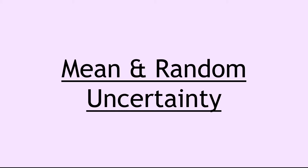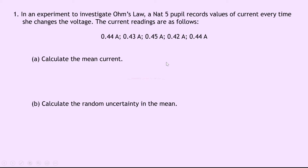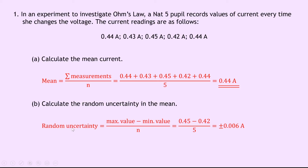Next we look at mean and random uncertainty. Question 1: in an experiment to investigate Ohm's law, a student records 5 values of current in amps. Part a asks to calculate the mean current — we add them all up and divide by 5, giving a mean of 0.44 amps, stated to two decimal places to be consistent with the question. Part b asks for the random uncertainty in the mean: maximum minus minimum divided by total number of measurements, which gives 0.45 minus 0.42 over 5, equalling plus or minus 0.006 amps.